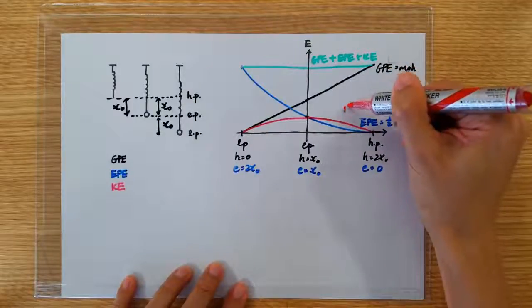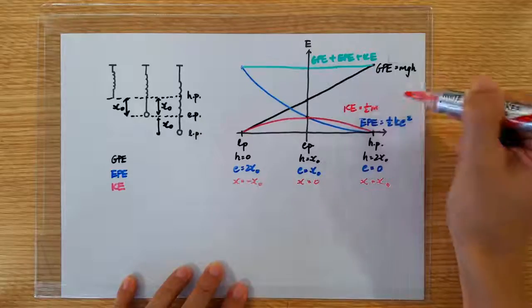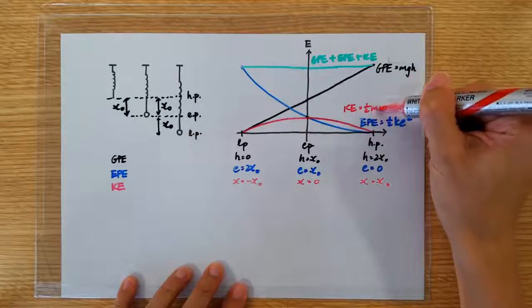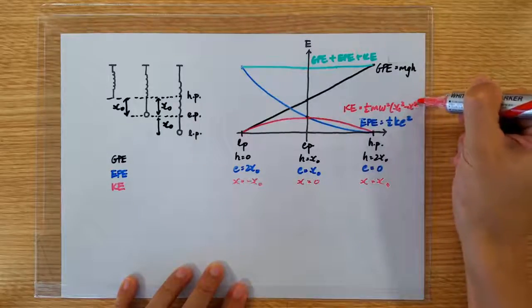So that is our KE. And I hope you know how to write the formula for KE. It's just half mv squared. But for the v squared, I'm going to write it as omega squared, x0 squared, minus x squared.